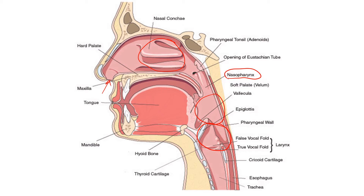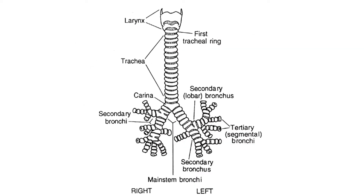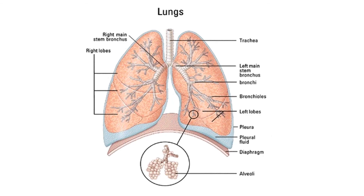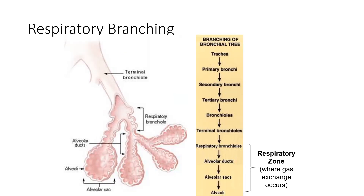From the laryngopharynx region, we travel into the larynx. From the larynx, we travel into the trachea. From the trachea, we travel to the primary bronchi — that's the first set of branches. We travel to the secondary bronchi, which is our second set of branches, then tertiary bronchi, which is our third set of branches. And then we travel to the very smallest passageways, which are these bronchioles.